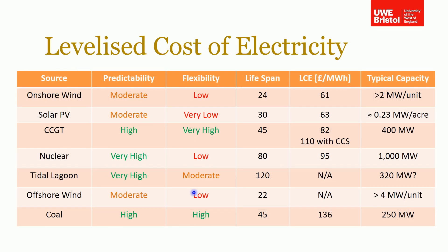We talked about different technologies in this session, and here's a comparison. Looking at the levelised cost of electricity, you can see that onshore wind is one of the lowest, which is perhaps counterintuitive. For the combined cycle gas turbine it's relatively low as well. But obviously, when you combine it with carbon capture and storage, which we've been talking about in our environment lecture, the cost goes up because you've got extra plant associated with that, which adds an additional cost.